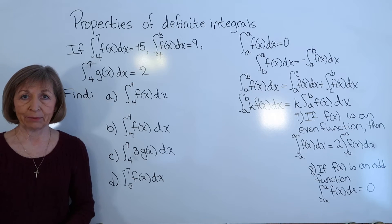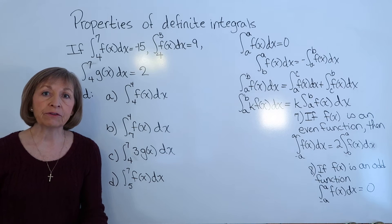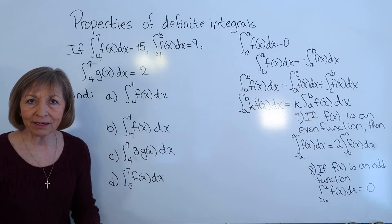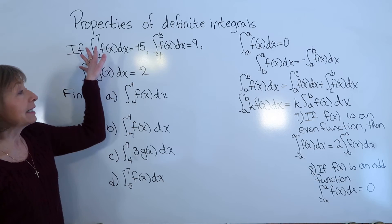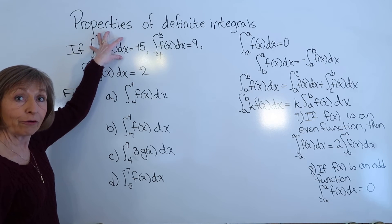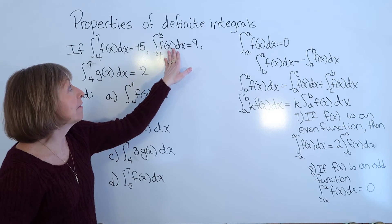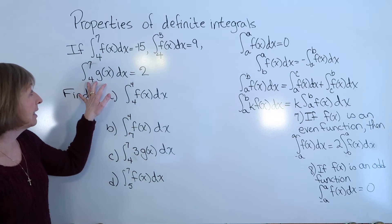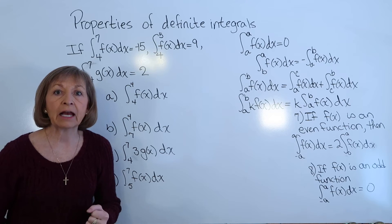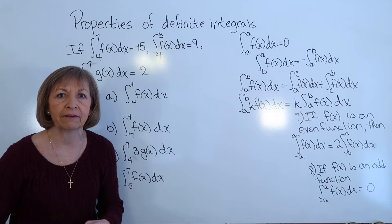We're given four examples. These problems give you the values of certain definite integrals and have you apply the properties. The given values are: the integral from 4 to 7 of f of x dx equals negative 15; the integral from 4 to 5 of f of x dx equals 9; and the integral from 4 to 7 of g of x dx equals 2. Read the setup carefully to identify the given information.